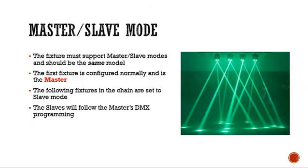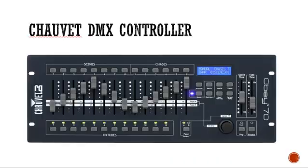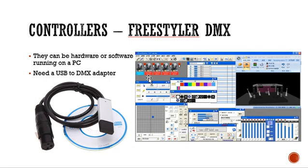You can also set these fixtures in master-slave mode, but the fixture must support it. If you have the same model, doing master-slave will make your life a lot easier. The first fixture is configured normally as the master, and the other fixtures in the chain are set to slave — they'll follow whatever happens to the master. Some programs like Freestyler implement this very nicely. In Freestyler, one fixture is the master and the four fixtures behind it are slaves, so all you have to do is change the setting on the master and the four slaves follow it.